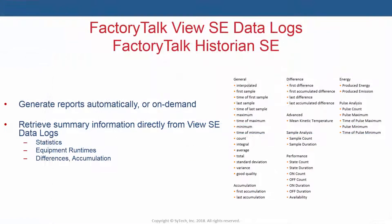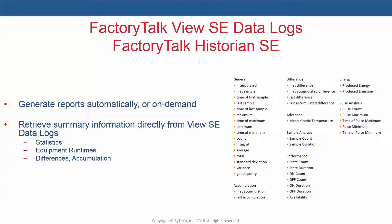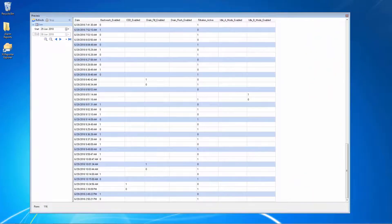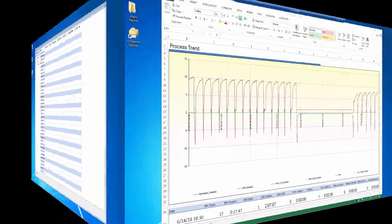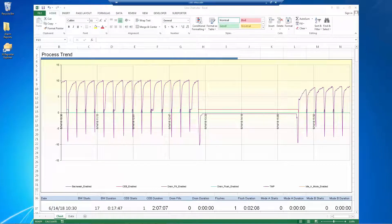Excel Reporter provides connectors to Factory Talk USC Datalogs and Factory Talk Historian. These connectors support both server-side summary calculations as well as Excel Reporter's own summary functions. For example, turn raw equipment start-stop data into a useful report like this.